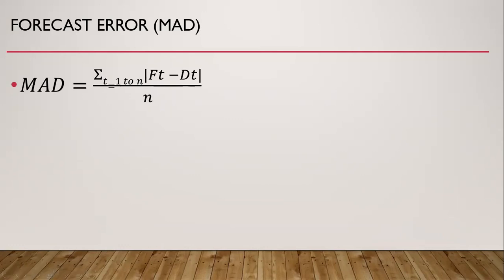So we can analyze the performance of forecasting technique. We use one of the methods by using mean absolute deviation. So this is the formula for mean absolute deviation. This is the summation of absolute difference between the forecast and actual demand.